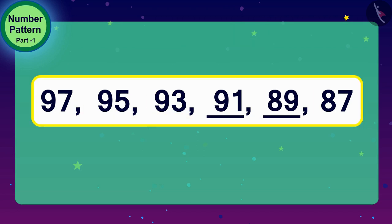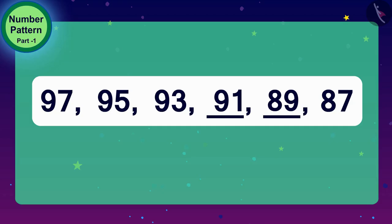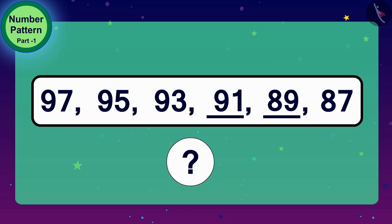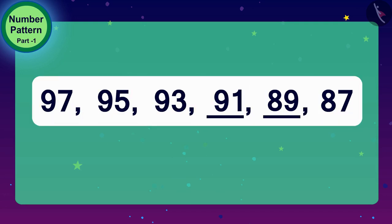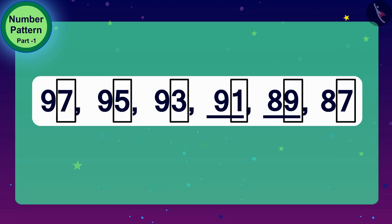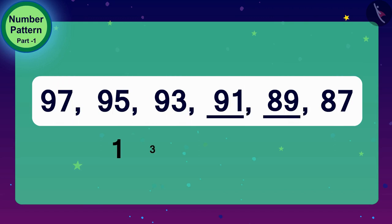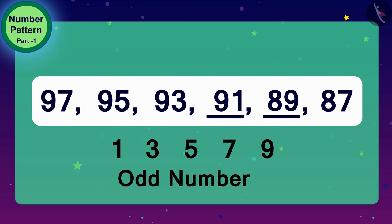Children, do you see something special in this pattern, like the pattern of even numbers? All numbers in this pattern have digits of 1, 3, 5, 7, or 9 in the unit place. Such numbers, which have digits of 1, 3, 5, 7, or 9 in the one-digit place, are called odd numbers.